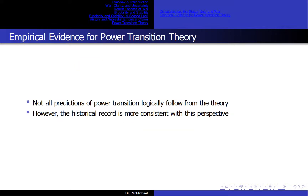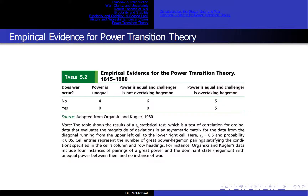Not all predictions of power transition logically follow from the theory. However, the historical record is more consistent with this perspective, as shown in Table 5.2. When power was unequal, war occurred in fewer cases — this seems to be closer to the historical record than neorealism.